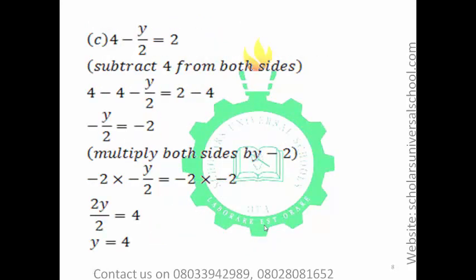Let's look at example C: 4 minus y over 2 is equal to 2. Subtract 4 from both sides. By the time you take this 4 to the other side, it will be minus 4. So subtract 4 from all sides: 4 minus 4 minus y over 2 equals 2 minus 4. So you have minus y over 2 equal to minus 2.